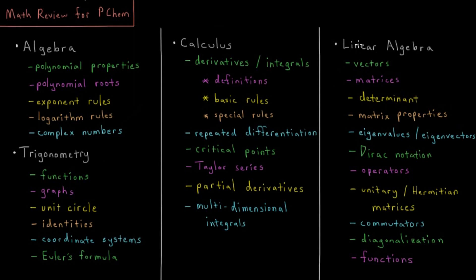Moving on to what might be advanced topics — unless your professor is fairly rigorous — we cover how to work with vectors and matrices, the determinants of matrices, which come up quite a bit even in undergraduate applications, and other properties of matrices such as eigenvalues and eigenvectors. Dirac notation comes up in quantum mechanics quite a bit, and you can use it in terms of matrices as well. Matrices can also be used as operators, and a lot of the same things taught in quantum mechanics can be done with matrices if you know how to make those connections.